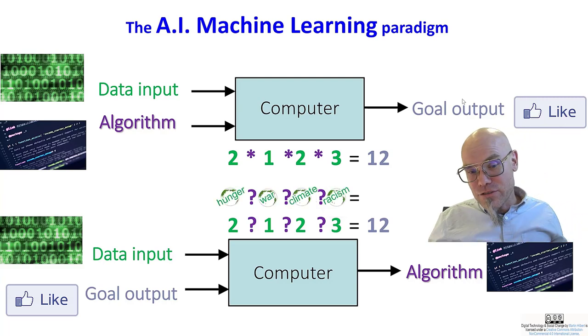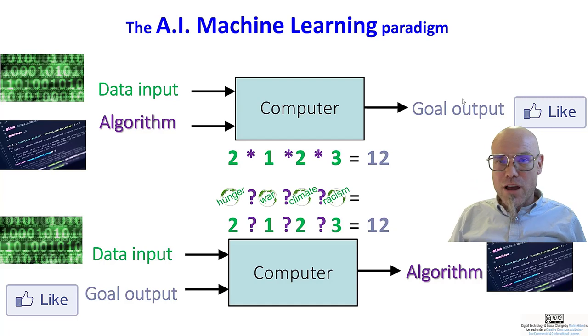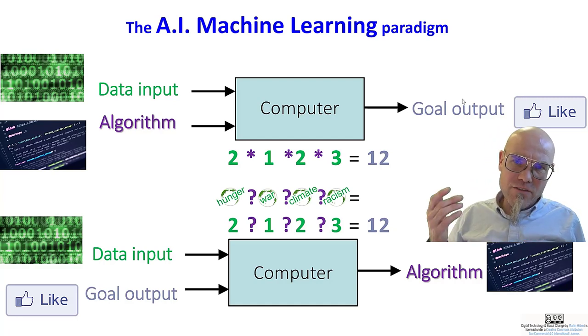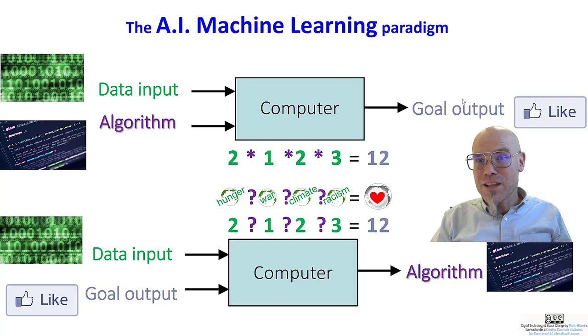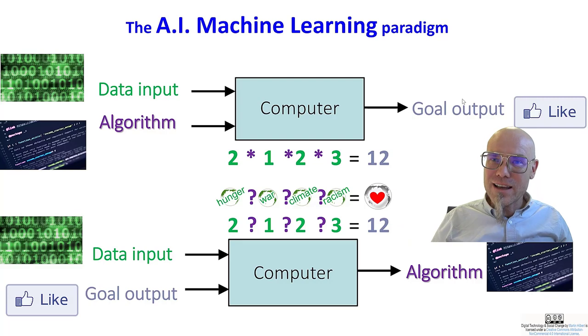And the idea is you can apply it to different things, even to problems that we haven't solved yet. For example, you have a world full of love hunger, of war, of climate crisis and racism. And what you want to compute is a world full of love. So artificial intelligence, machine learning, if I give you all the data, can you help us to solve the world's problems?